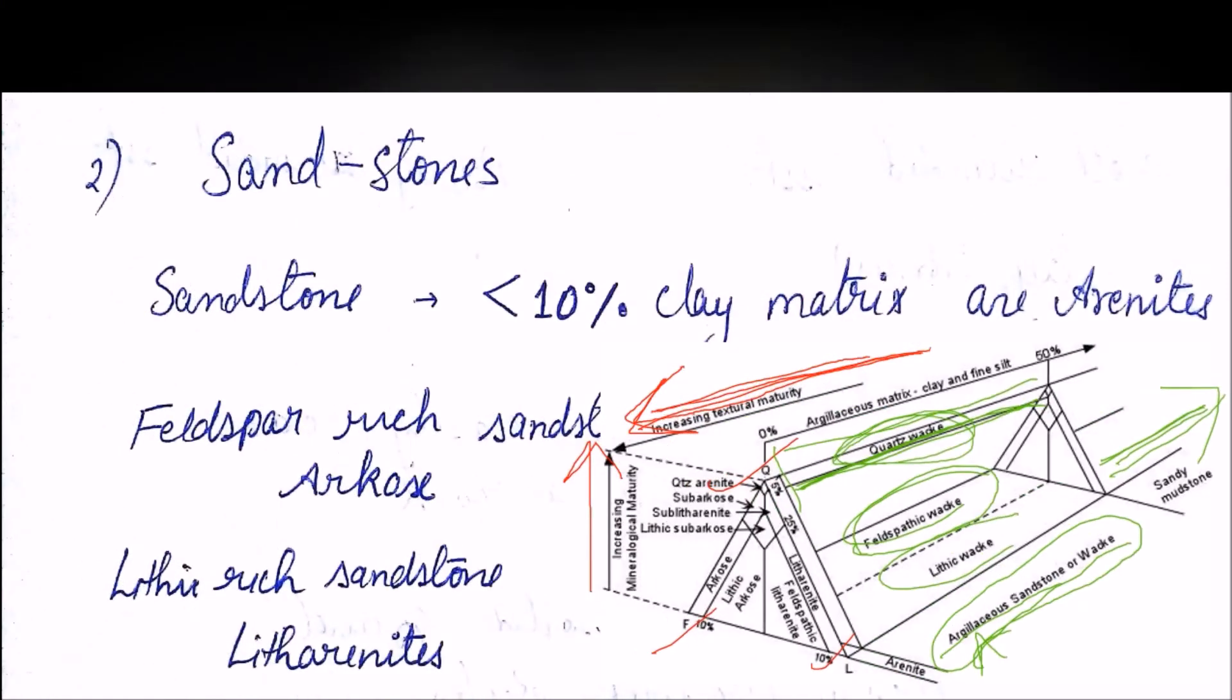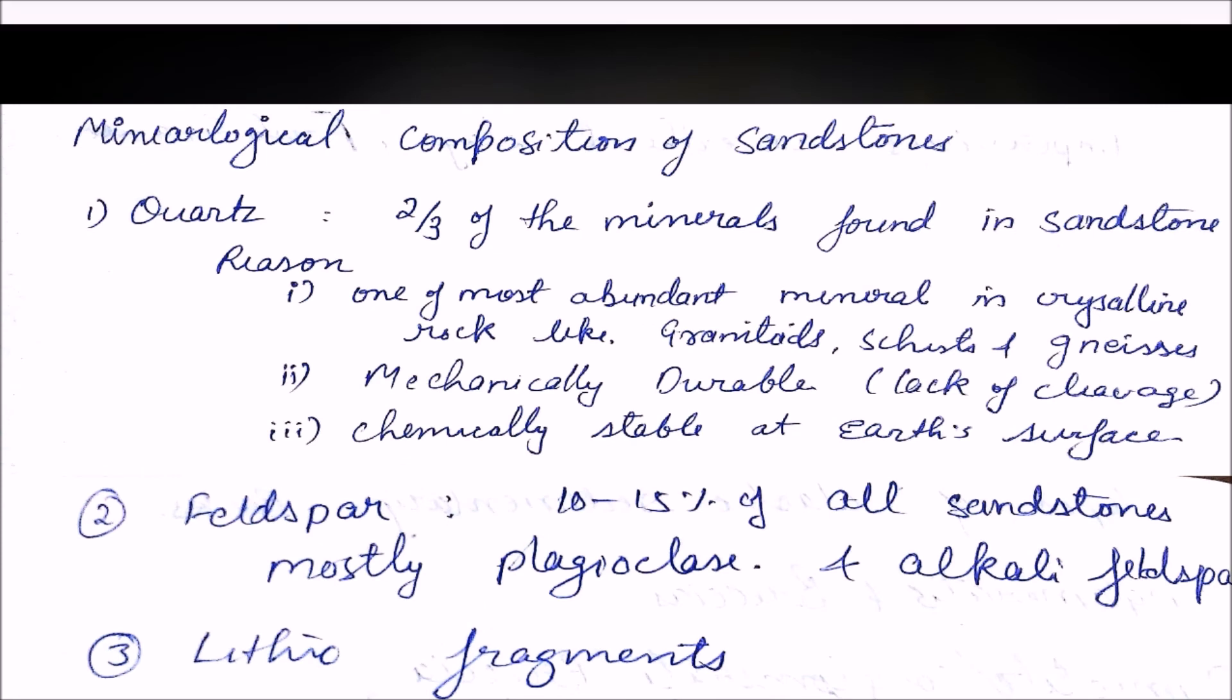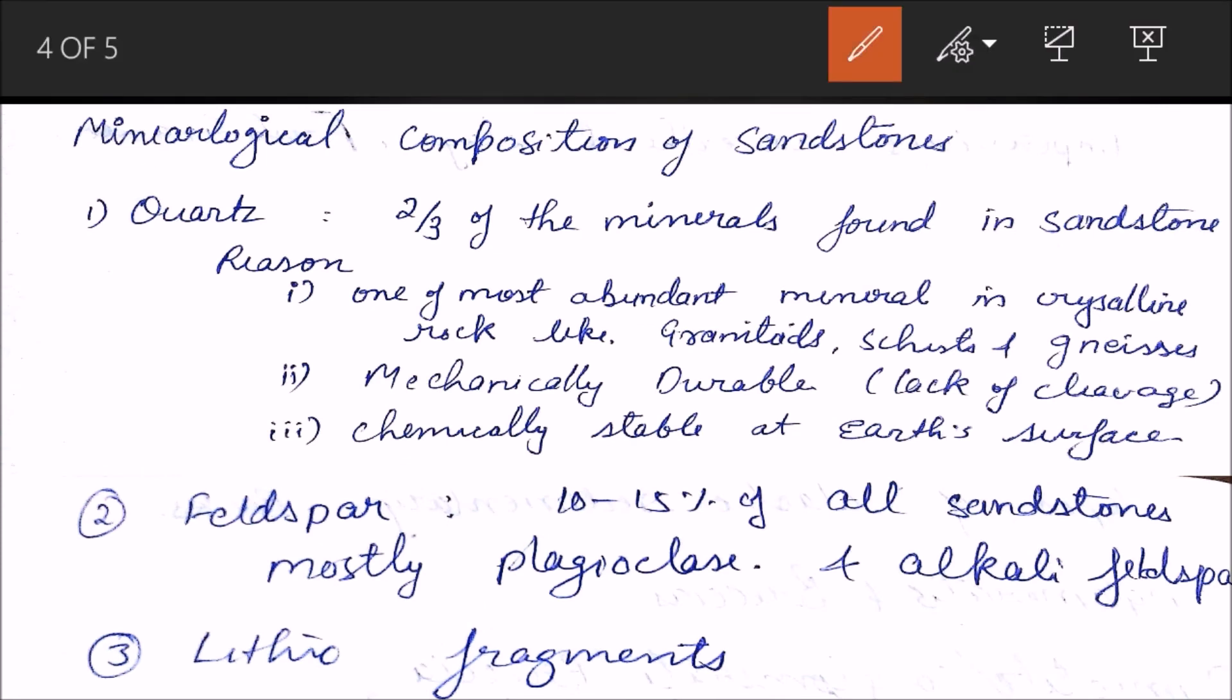Third is - before going to third, we need to understand the mineralogical composition. We saw that there was quartz. Two-thirds of the minerals found in sandstone is quartz. There are three reasons to it. First, it is one of the most abundant minerals in crystalline rock like granitoid, schist, and gneiss. Then they are mechanically durable because there is no cleavage in quartz.